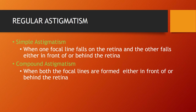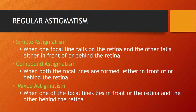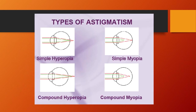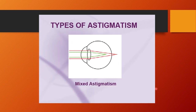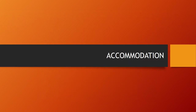In regular astigmatism, refractive power changes uniformly between perpendicular meridians. Types: simple hyperopic astigmatism — one focus is on the retina, the other is behind it; simple myopic astigmatism — one focus is on the retina, the other is in front; compound hyperopic — both focuses are behind the retina; compound myopic — both focuses are in front; mixed astigmatism — one focus is in front and the other is behind the retina.